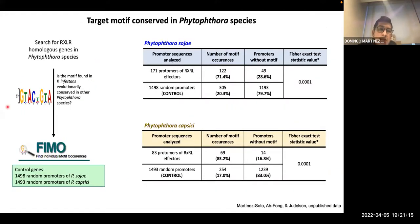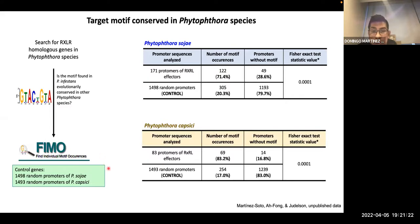Interestingly, this target motif is also present in other Phytophthora species, as you can see here — for example, in Phytophthora sojae and Phytophthora capsici.